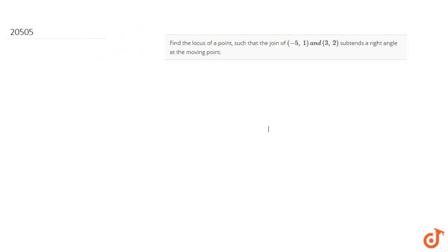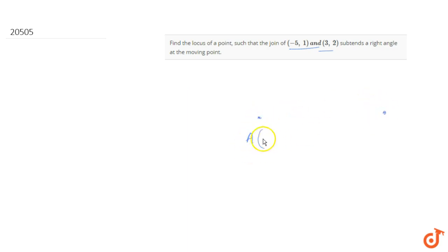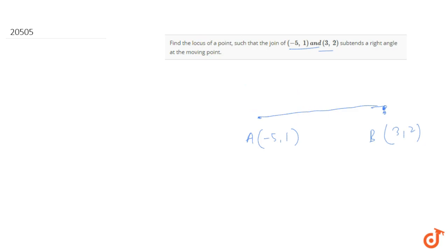In this question we have to find the locus of a point such that the join of two points — A(-5, 1) and B(3, 2) — subtends a right angle at the moving point. Let's say the moving point is P(h, k), and we need to find its locus such that angle APB equals 90 degrees.